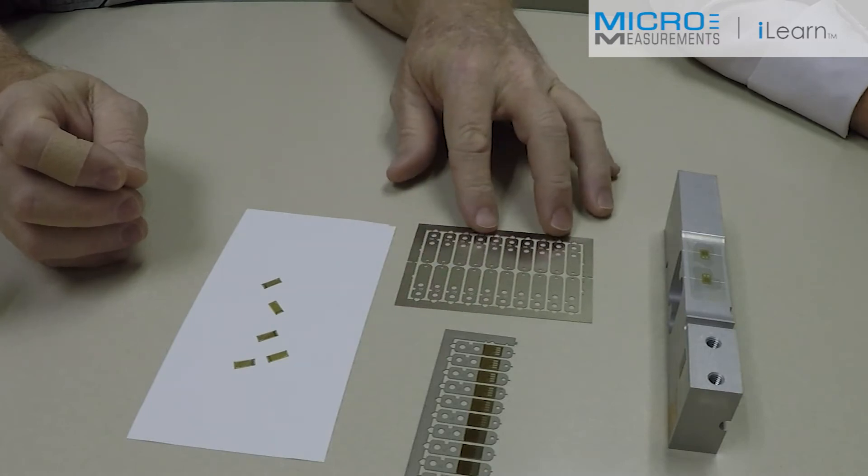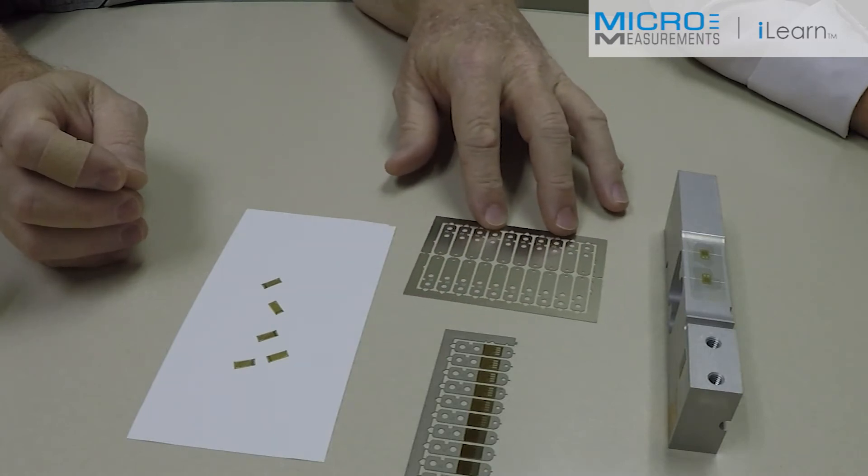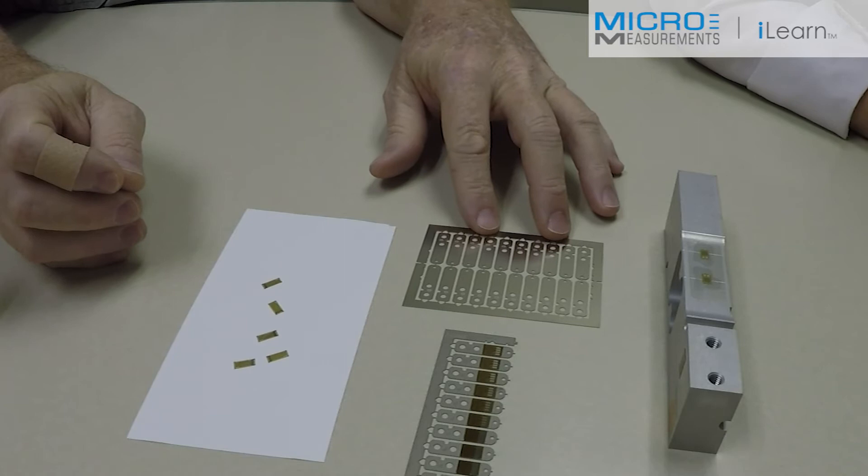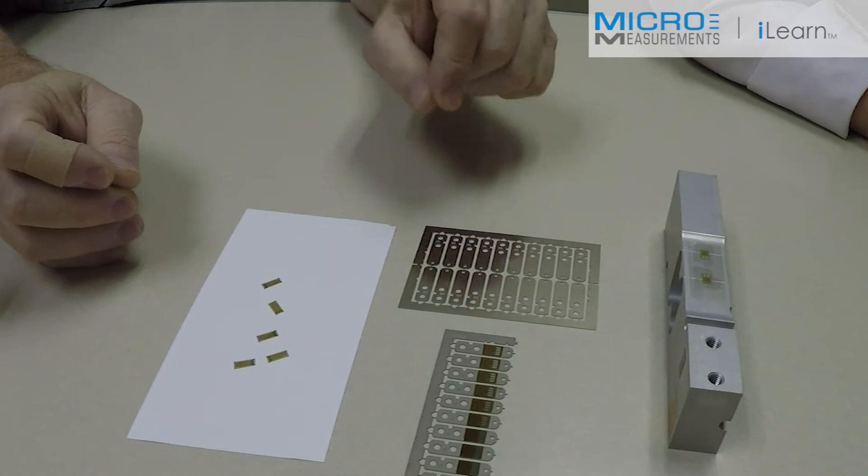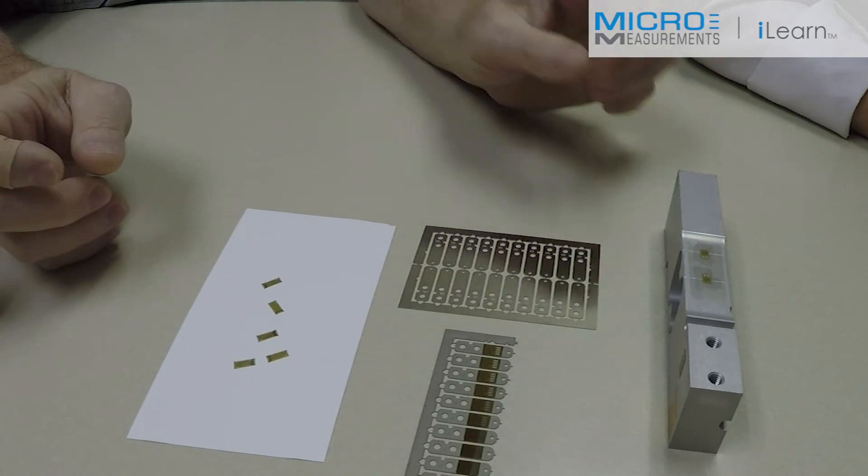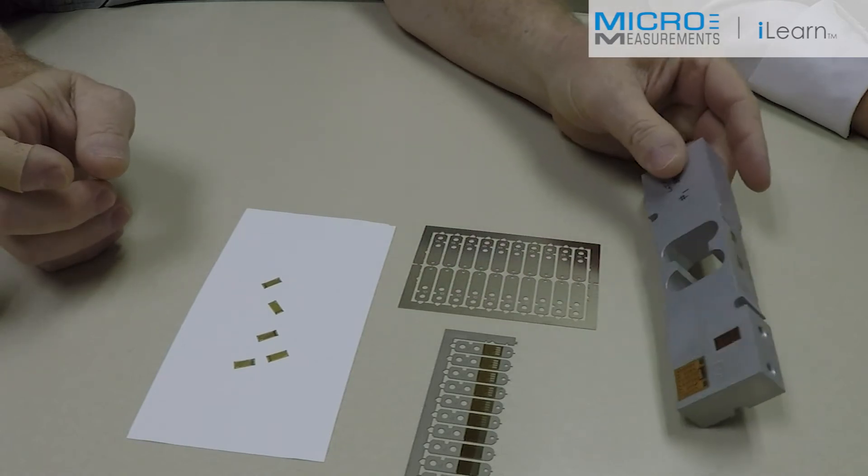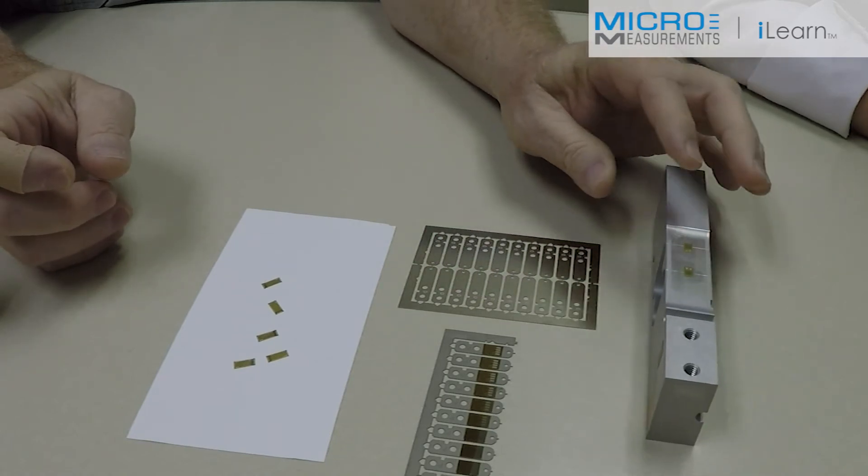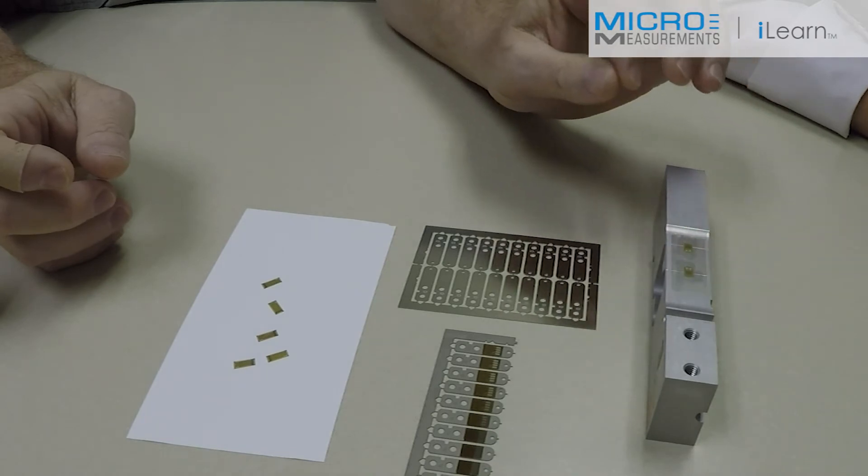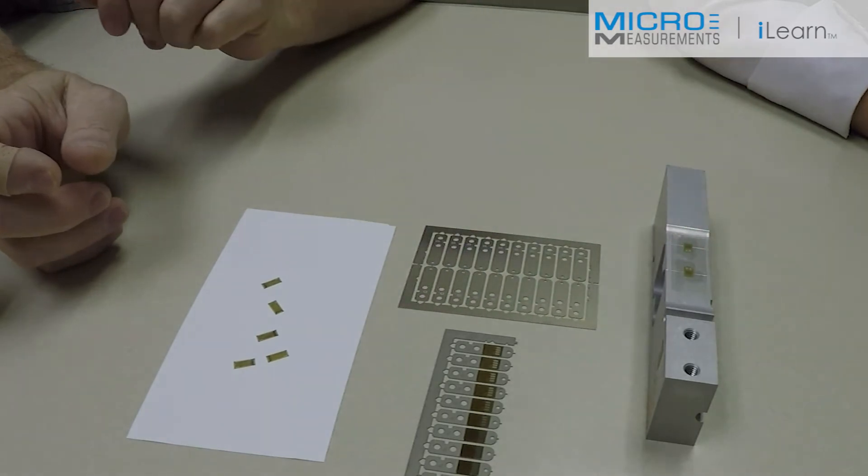If the spring element is very thin, like these hybrid sensors, then you can just tack it with a soldering iron in place, clamp it and cure it. If it's a thicker spring element like this aluminum load cell, you'd need to locate it, put a piece of tape over it, hold it, then clamp it and cure it.